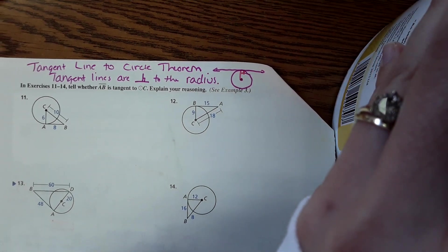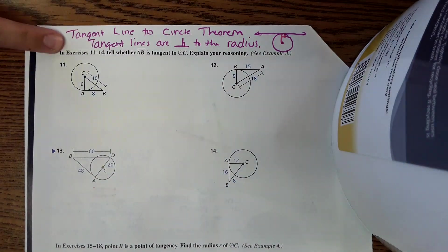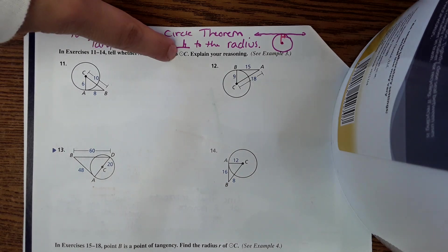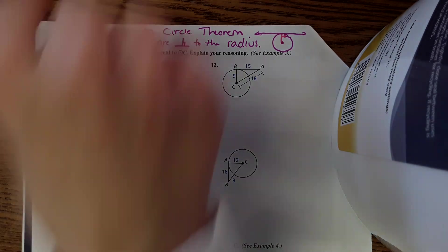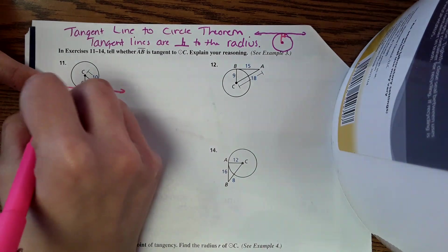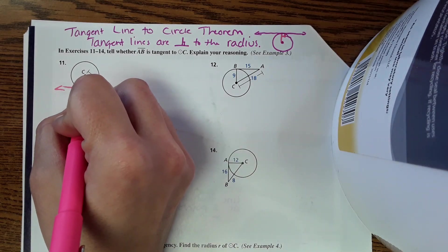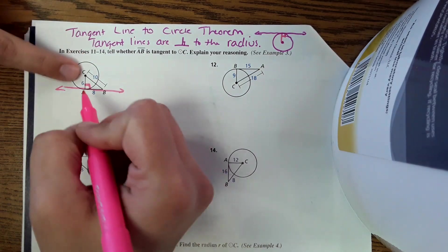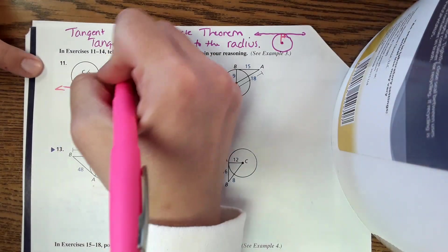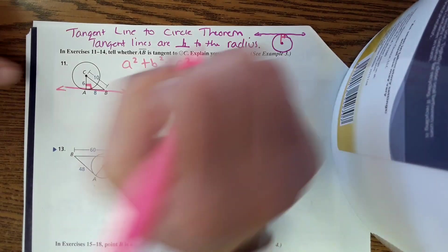Then using that, we're going to answer the next couple questions. This says in exercises 11 through 14, tell whether AB is a tangent to circle C. Explain your reasoning. In these pictures, this is AB, your tangent line. If it is, then this is a 90 degree angle, meaning that this is a right triangle and it would follow Pythagorean theorem. So we're going to use Pythagorean theorem to determine whether AB is actually a tangent line.